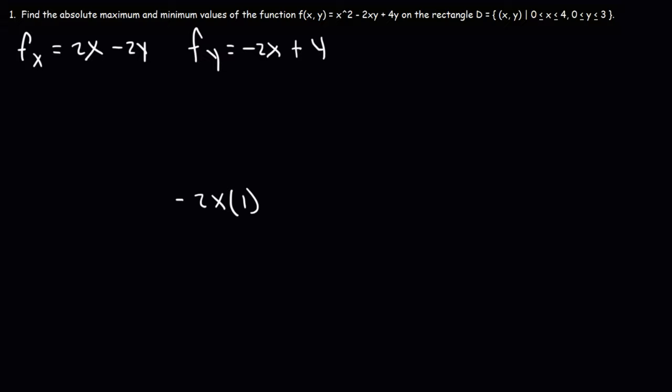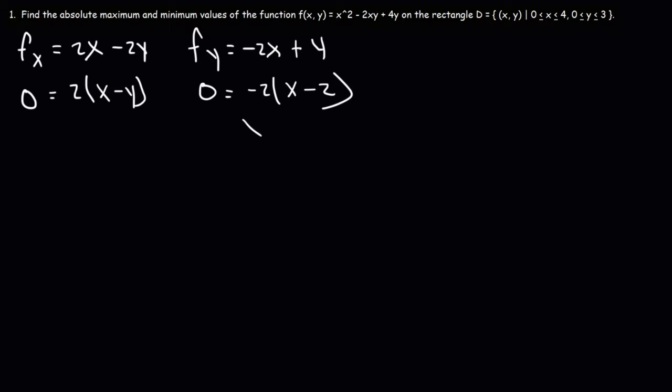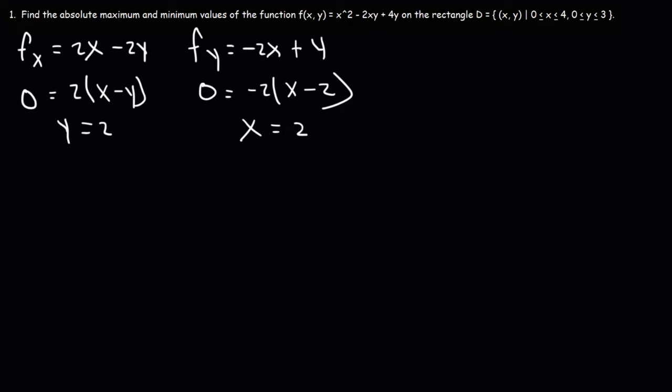Our next step is to set each partial derivative equal to 0 and solve for x and y. On the left, we could take out a 2. On the right, we could take out a negative 2, which will leave behind x minus 2. So we can solve for x here: x is 2. If we take that x value and plug it into that expression, we can see that y is equal to 2. So this gives us the critical point (2, 2).